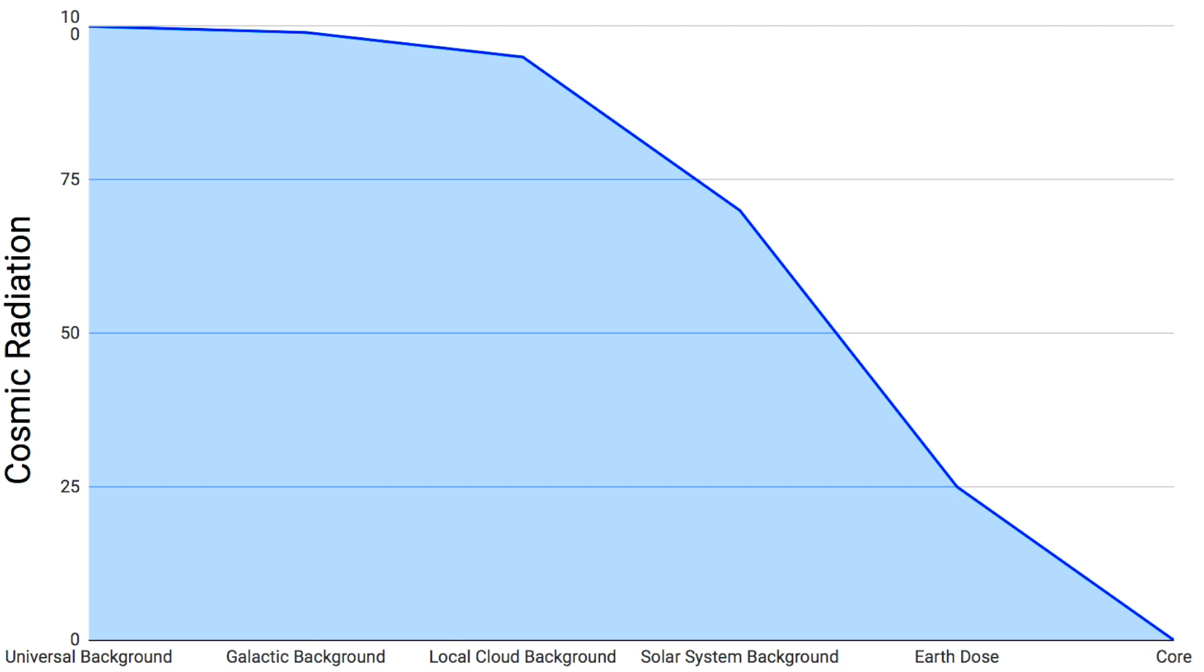The blue area begins to recede strongly within the local cloud. The dust may be relatively sparse as we would consider it, but it is vast and it blocks out radiation the further in you go. The solar magnetic fields of the heliosphere around our solar system take out much, much more, and so do Earth's magnetic fields.